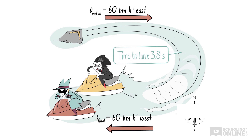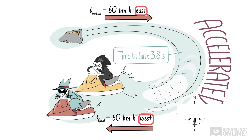Although their speeds remained the same, the velocities of both jet skis changed because their direction of travel changed. Consequently, both jet skis accelerated. This example emphasises that turning objects accelerate, even if their speed remains constant.